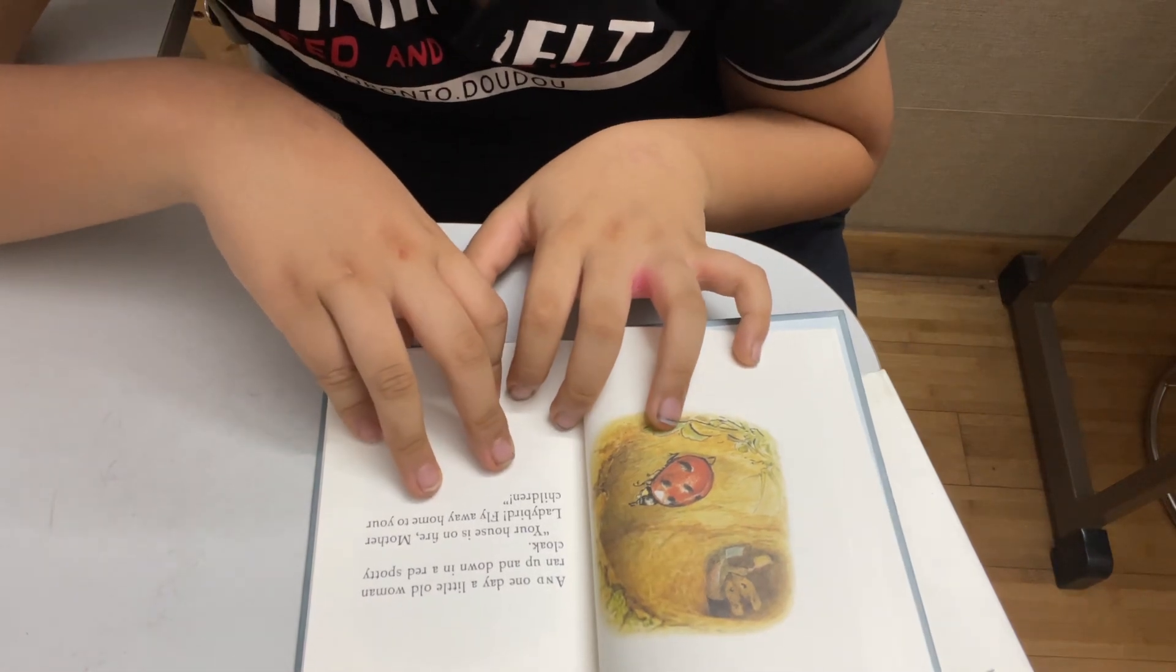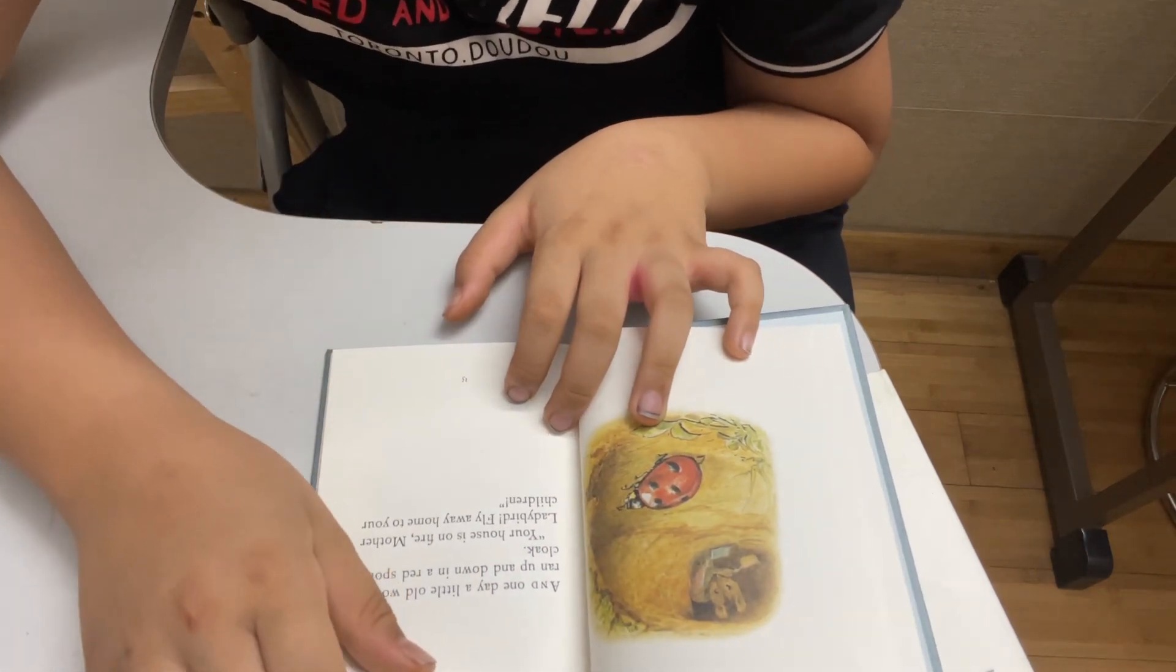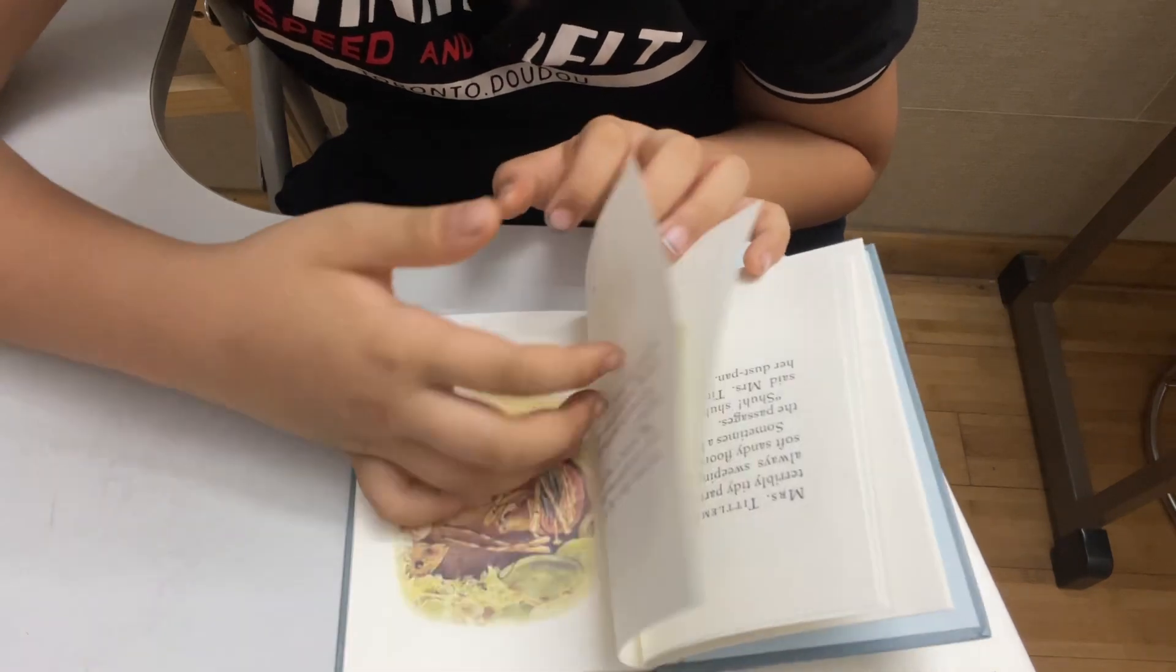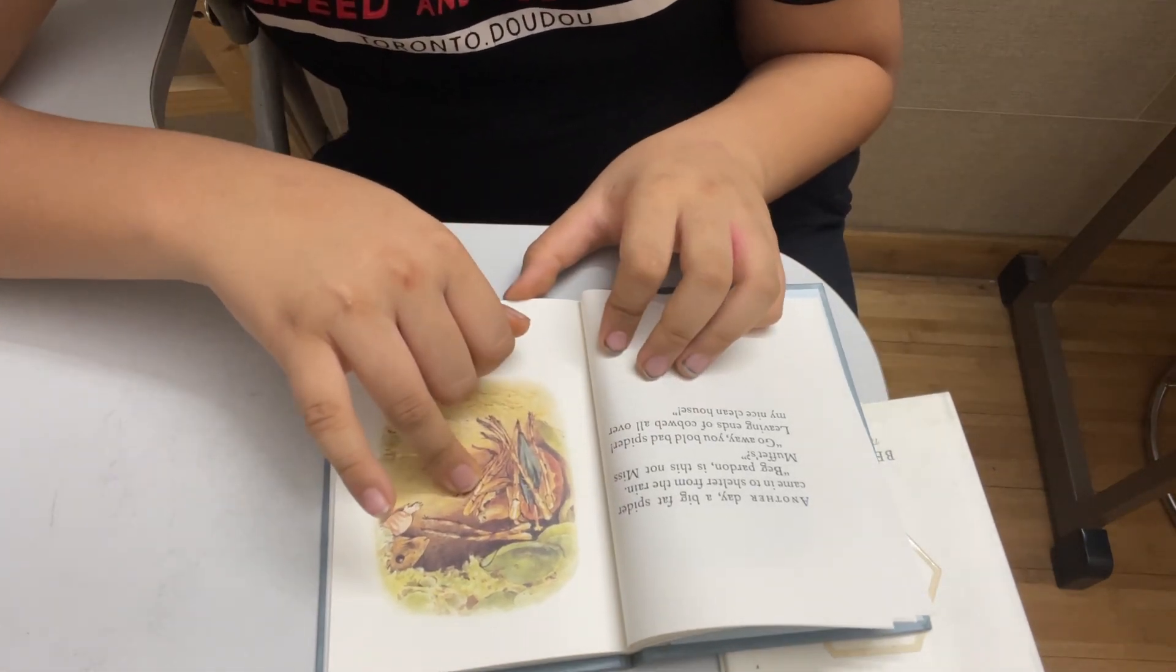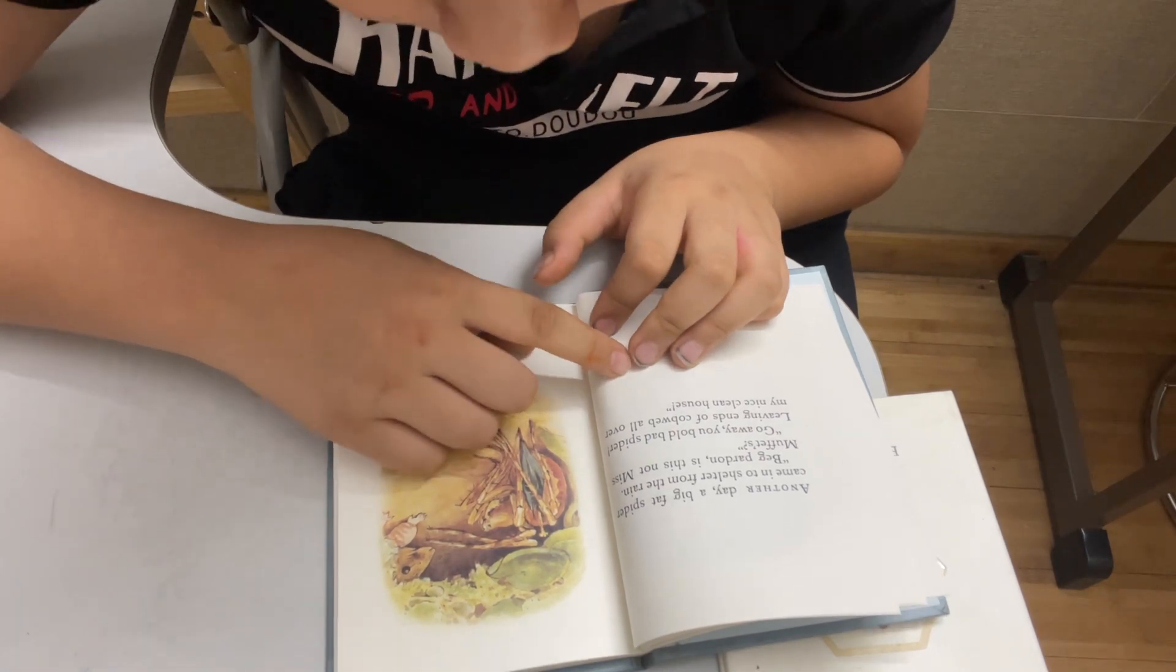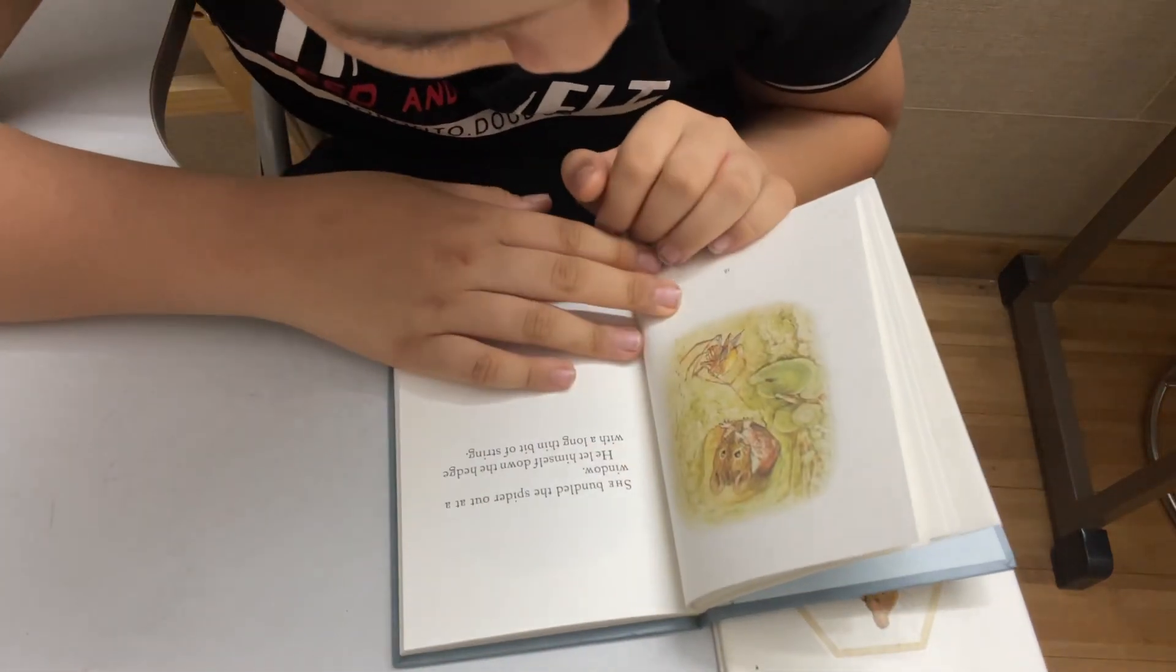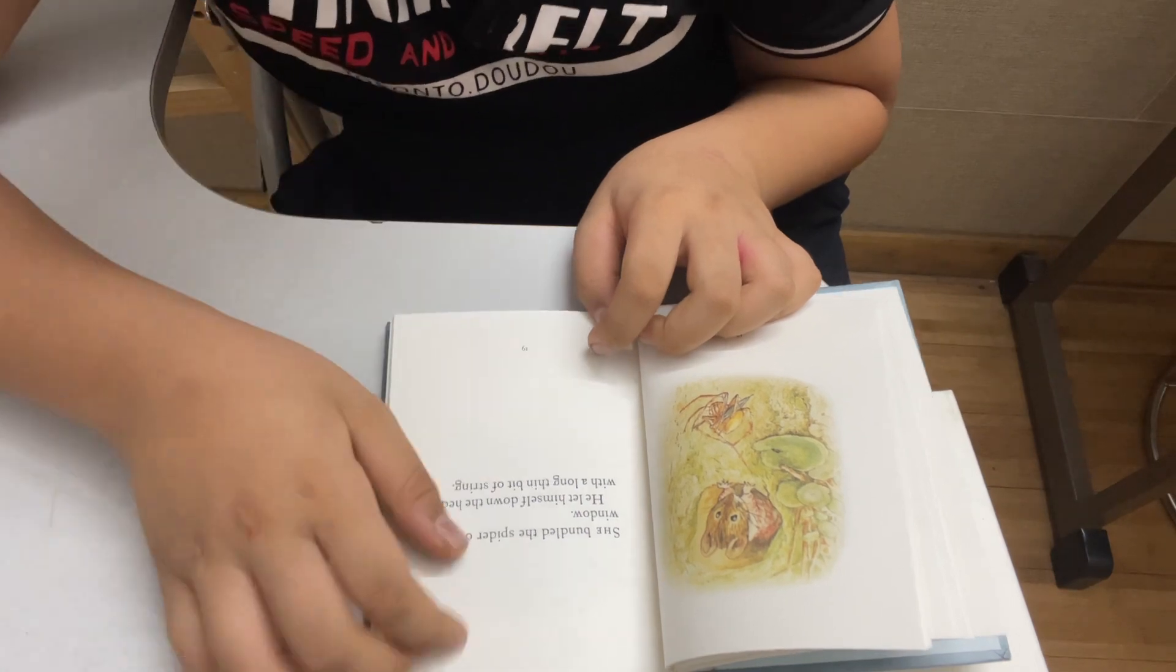One day a little old woman ran up in a red spotty cloak. Your house is on fire, Mother Ladybird. Fly away home to your children. Another day a big fat spider came in to shelter from rain. Beg pardon, is this not Mrs. Moppet's? Go away, you bold bad spider, leaving ends of cobweb all over my nice clean house. She bundled the spider out of the window. He let himself down the hedge with a long thin bit of string.